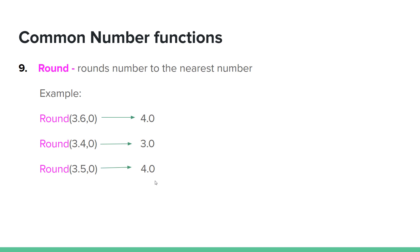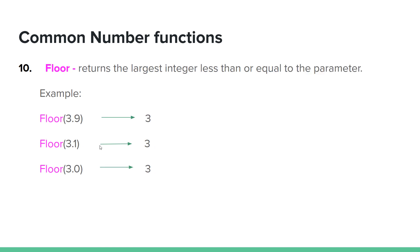FLOOR returns the largest integer less than or equal to the parameter. So the floor of a number will return the largest integer that does not exceed the given value. For example, the floor with 0 also returns the closest lower integer.